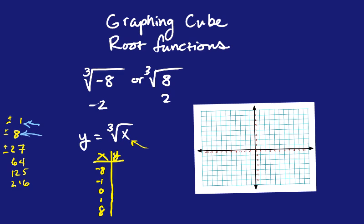And so then I'm just going to plug those numbers in and get y values. When I take the cube root of negative 8, that's negative 2. The cube root of negative 1 is negative 1. The cube root of 0 is 0. The cube root of 1 is 1. And the cube root of 8 is 2. And I'm going to plot all those points on our coordinate plane.